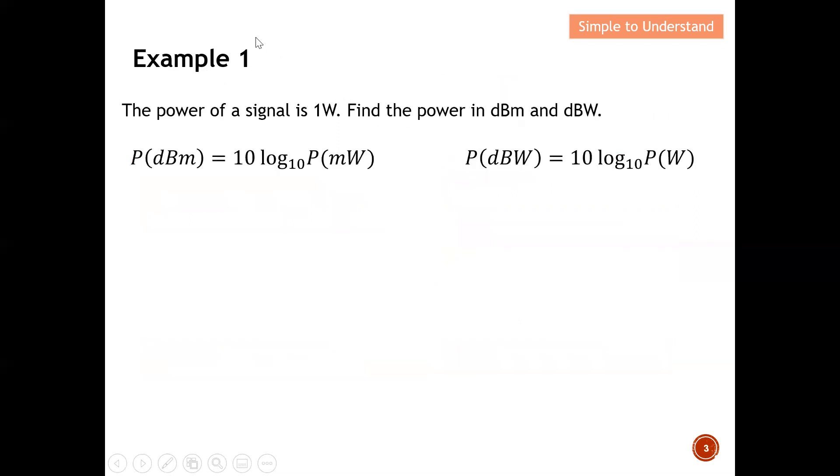Next, let's quickly do the example. Okay, the first example. The power of a signal is 1 watt. Okay, so I am given the power of signal is 1 watt, which means that this 1 watt is a ratio. Okay, find the power in dBm and dBW. Okay, so I am tasked to convert from ratio to dBm, ratio to dBW.